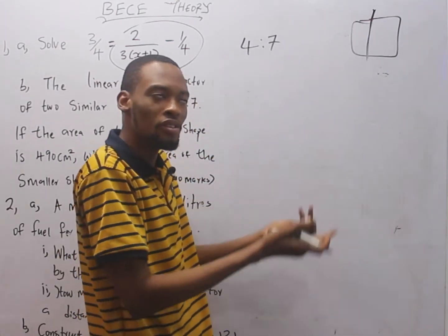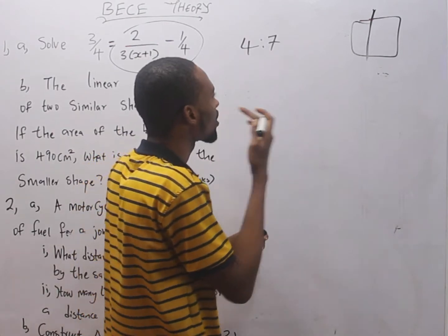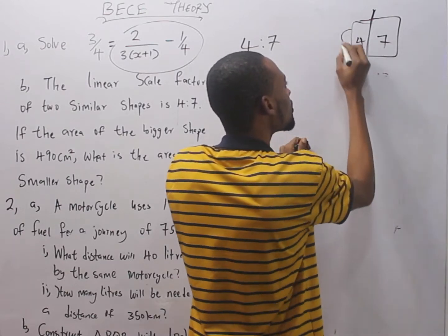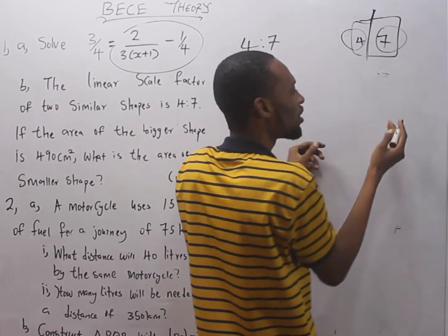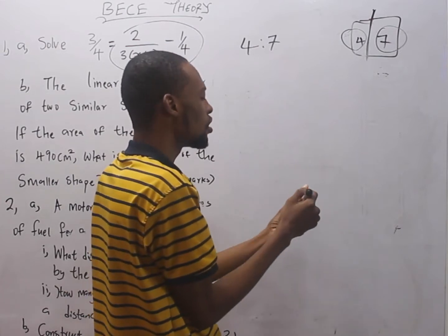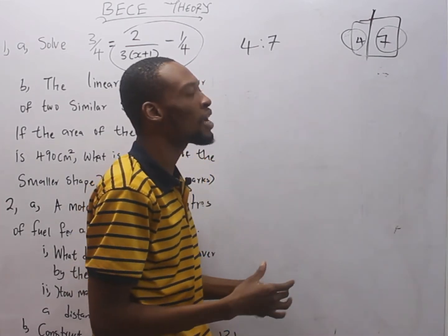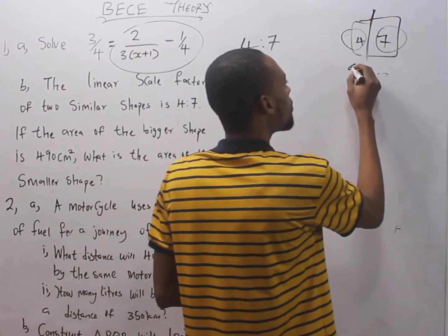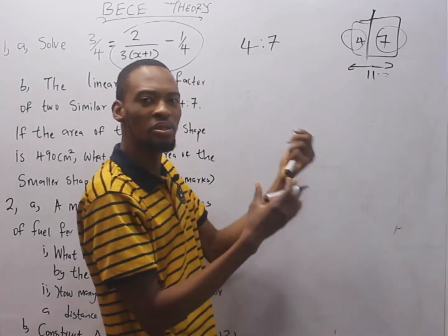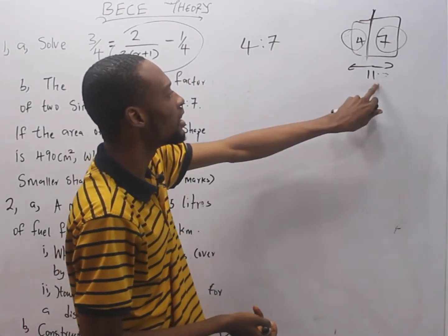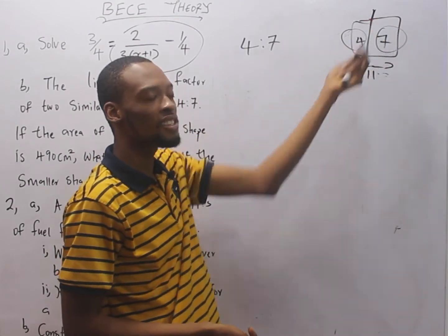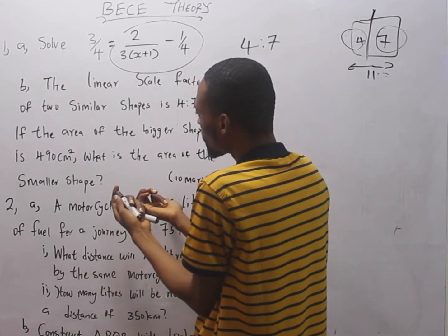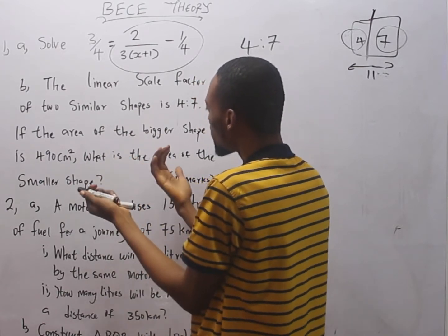Since it is 4 ratio 7, it means after sharing something, this one takes 7. This one takes 4. So this is the smaller share. This is the bigger one. If it's in 4 ratio 7, what is the total ratio? The total ratio will simply be 4 plus 7 which is 11.